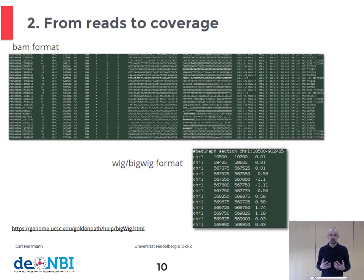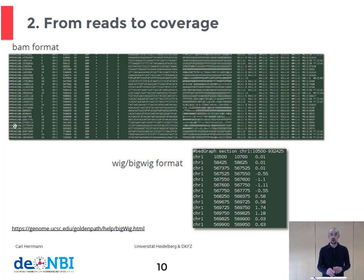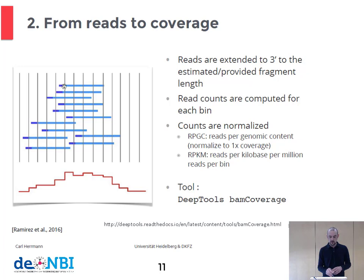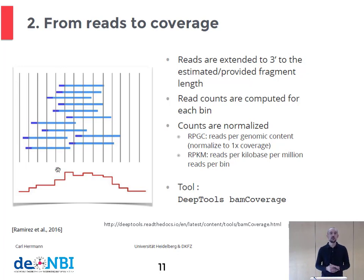To display the signal, we usually convert reads stored as BAM files into a coverage or signal track, typically stored in WIG or bigWIG format. In BAM format we see individual reads, and this is converted to WIG/bigWIG format where for each genomic locus we have a value of the signal. The reads are aligned on the genome, but remember that reads only represent the end of the immunoprecipitated fragment. If we know the fragment length, these reads can be extended informatically. We then grid the genome into bins of 10, 50, or 100 base pairs and count how many fragments fall into each region.